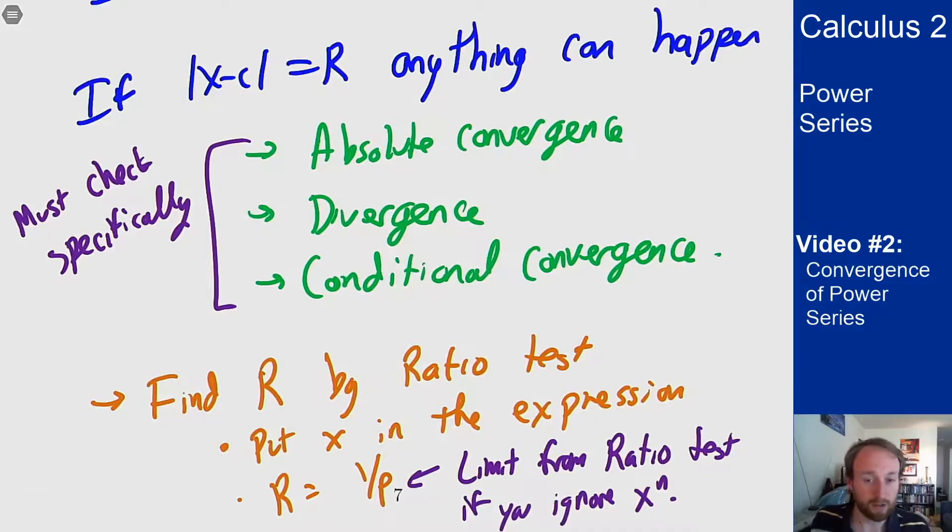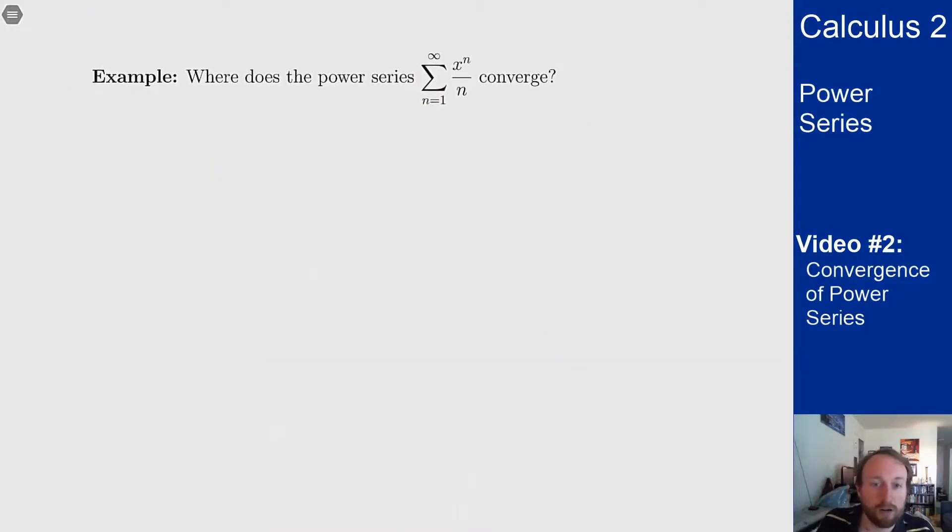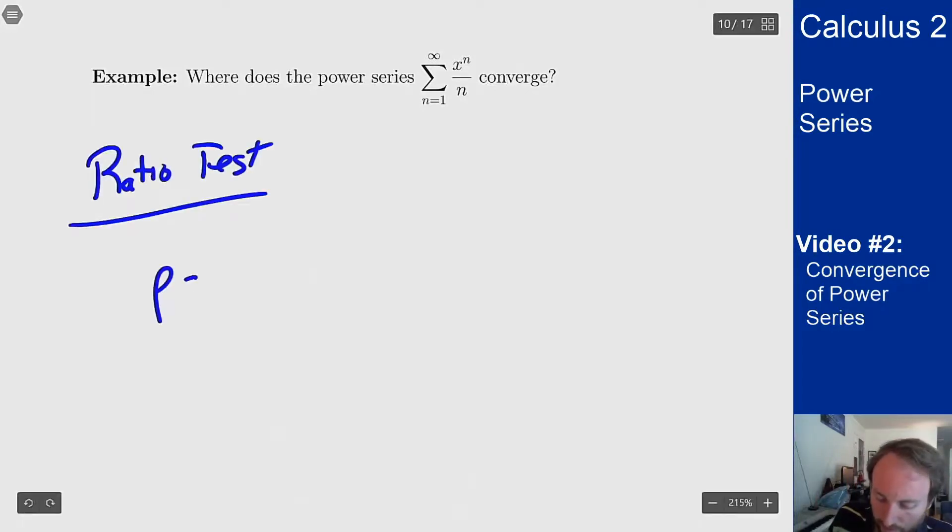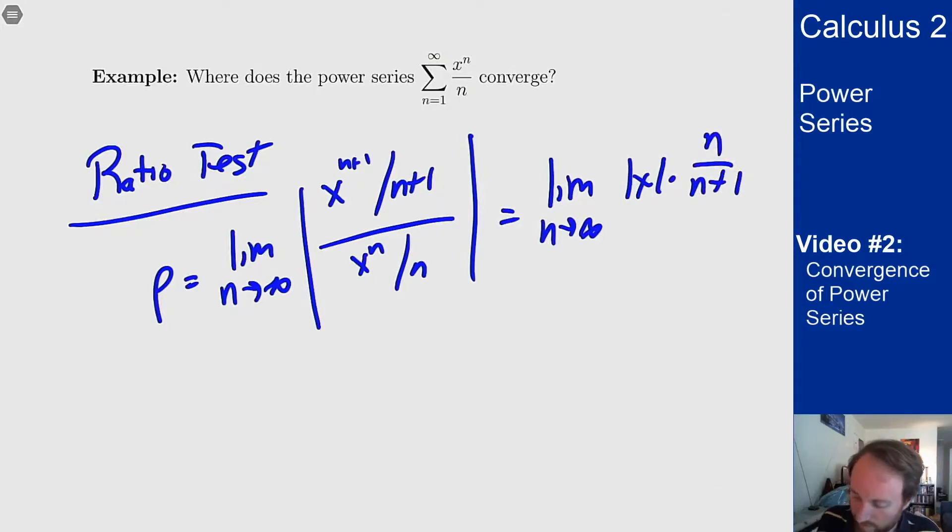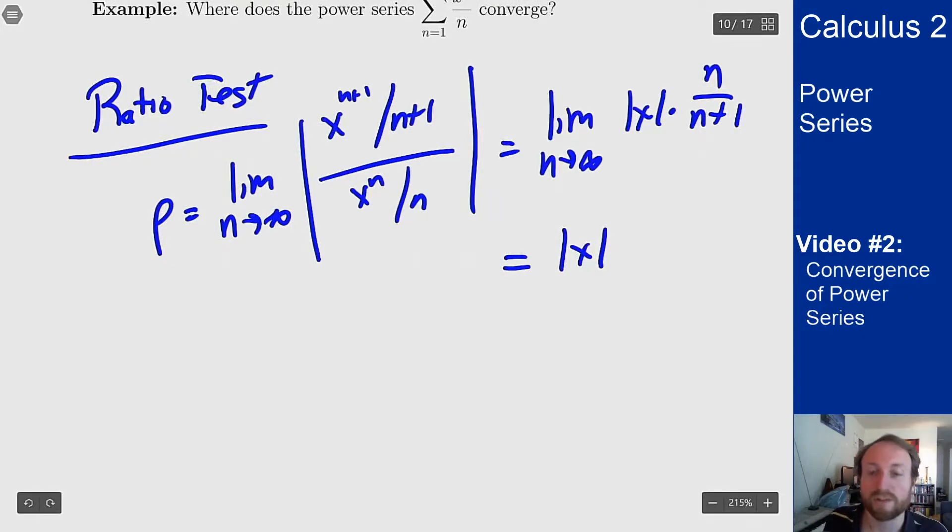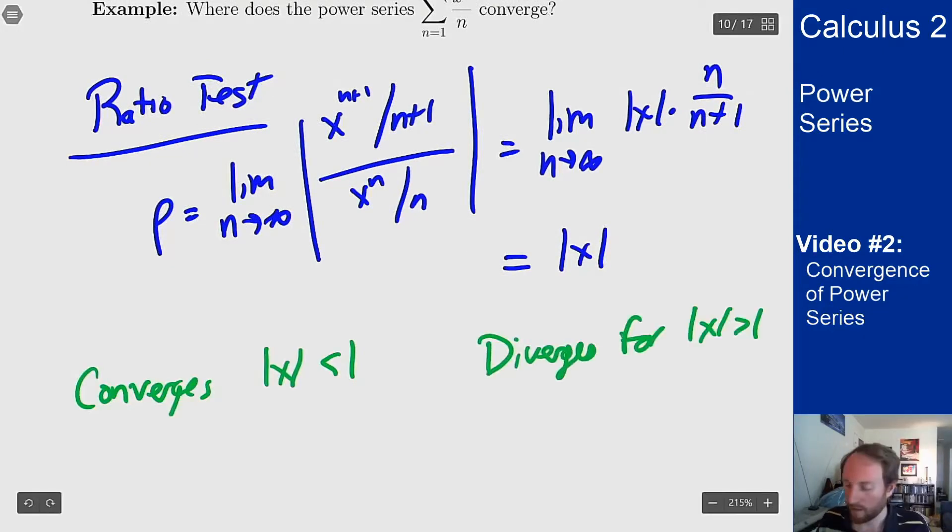Let's see one more example what this might look like. Where does the power series sum of x to the n over n converge? So let's do a ratio test. For this I want rho to be the limit as n goes to infinity of x to the n plus 1 over n plus 1 over x to the n over n, which is the limit as n goes to infinity of absolute value of x times n over n plus 1. That last bit goes to 1 so this is just |x|. So this converges for absolute value of x less than 1 and diverges for the absolute value bigger than 1.